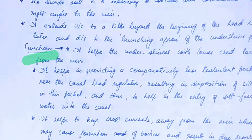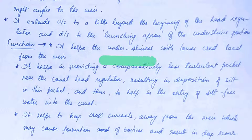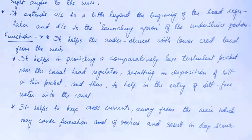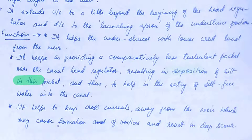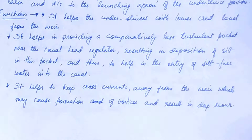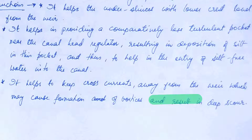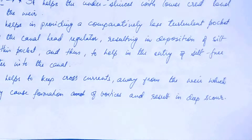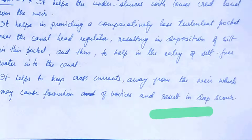The function it performs is to separate the under sluices with lower crest level from the weir, helping to provide a comparatively less turbulent pocket near the canal head regulator. This results in deposition of silt in this pocket, thus helping to prevent the entry of silt into the canal. Divide walls also help to keep cross currents away from the weir, as cross currents may cause formation of vortices and result in deep scour.